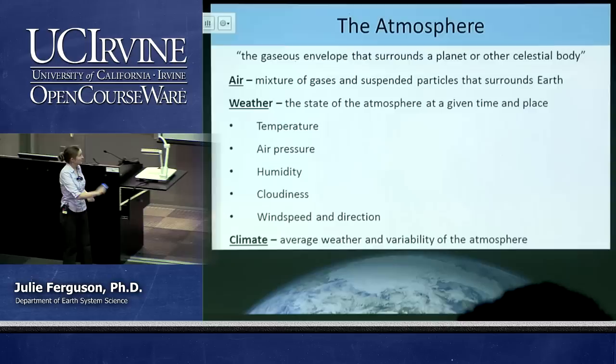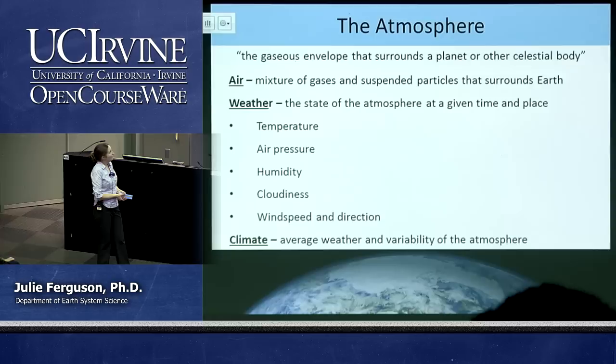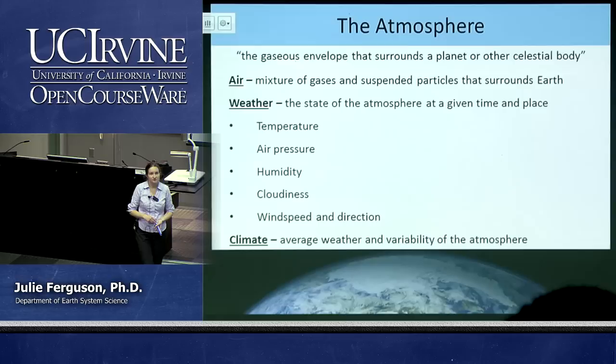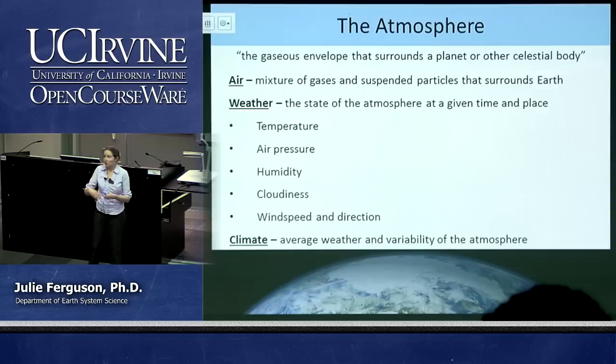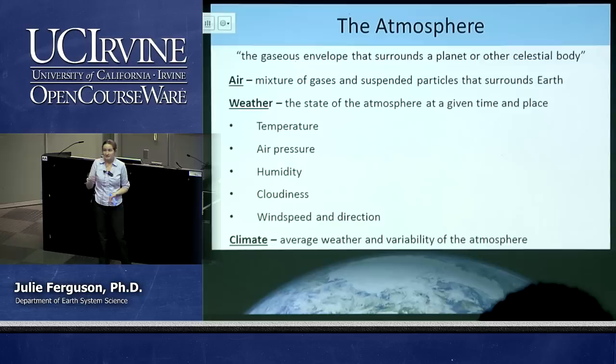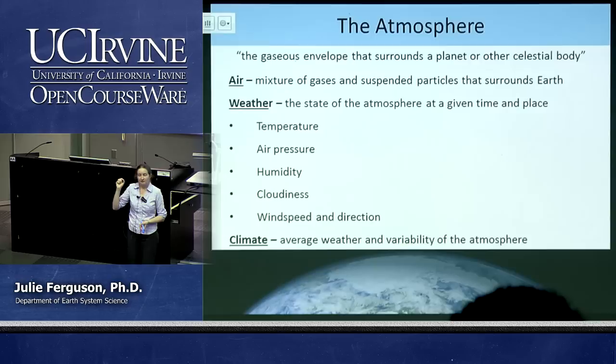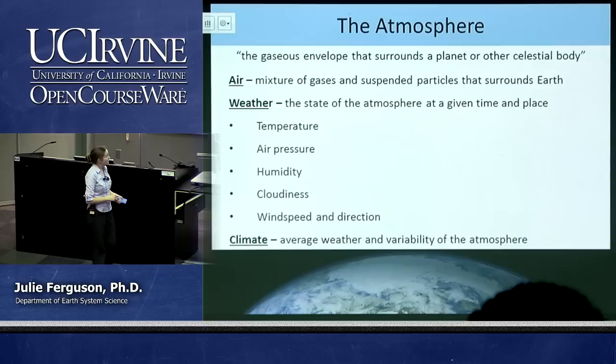We have a few quick definitions. Basically anything can have an atmosphere — Mars has a tiny bit of atmosphere left, Venus has an atmosphere. An atmosphere is that mixture of gases surrounding a planet or any celestial body such as a moon. Air is what is specific to Earth — that's what we are breathing: that mixture of gases, but also tiny particles so small they stay suspended in the air.